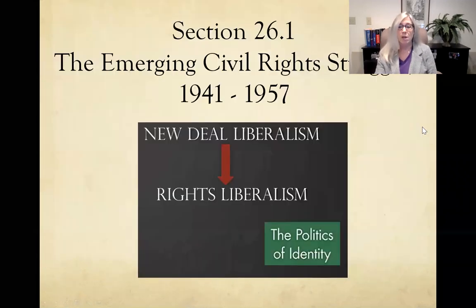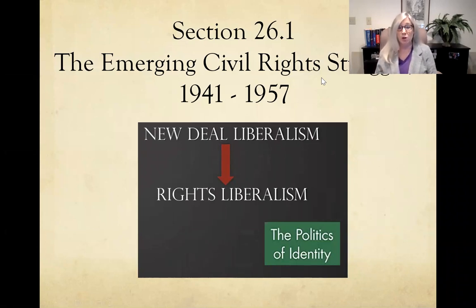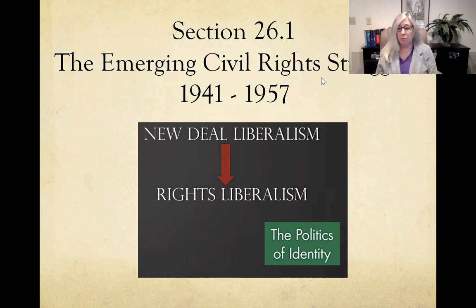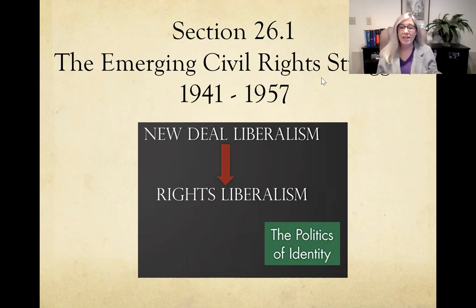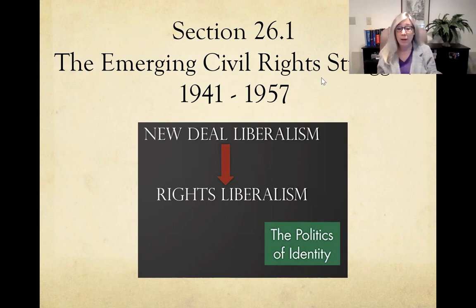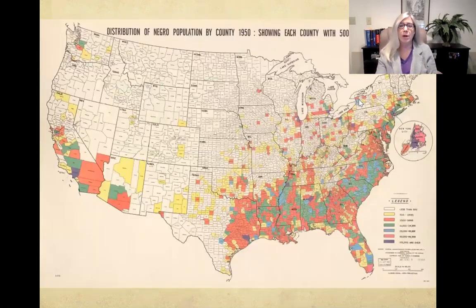We're going to consider how the New Deal — which was about more government involvement in the economy and regulation of businesses — how that New Deal liberalism led to what we call rights liberalism, where you're looking at the identities of various groups of people and whether or not they are treated equally under the law in the United States.